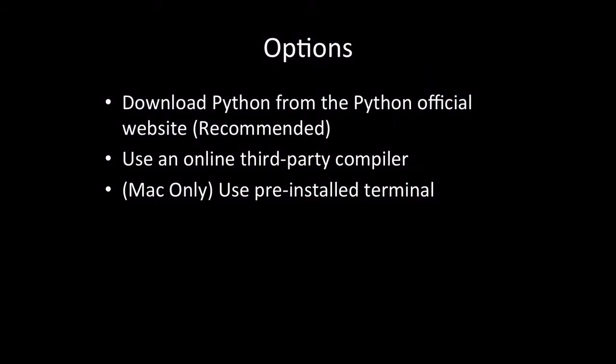As you can see, there are several ways to achieve this. The first is to download Python from the Python official website. This is recommended because you get the official Python compiler, and the compiler is basically what translates the programming code, which is Python, into a language that the computers can actually understand, which is binary.